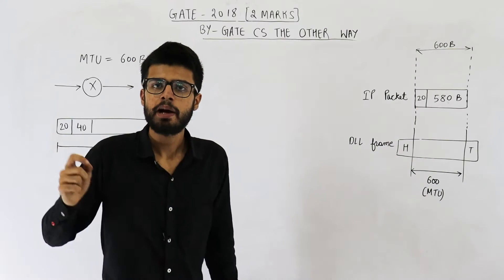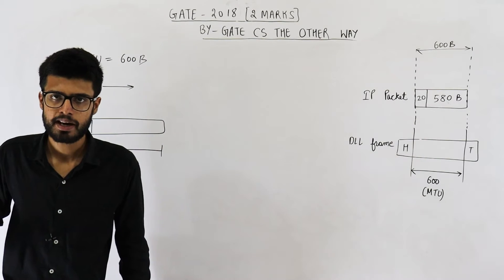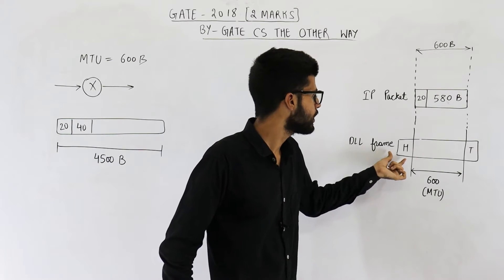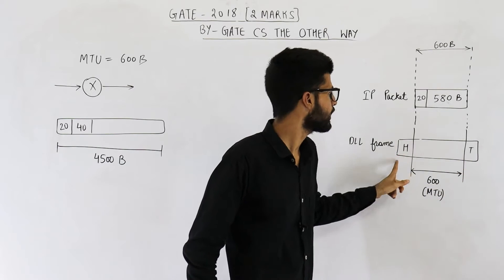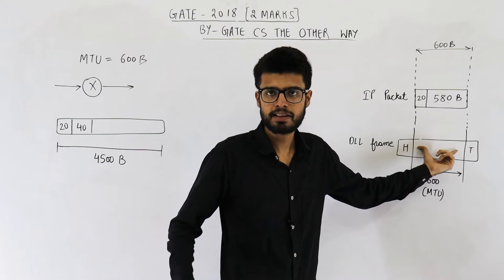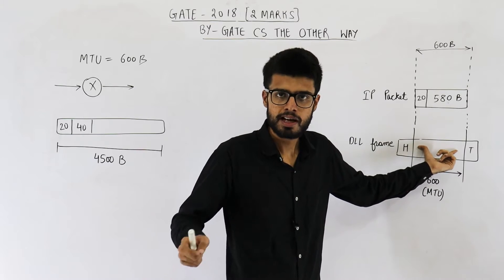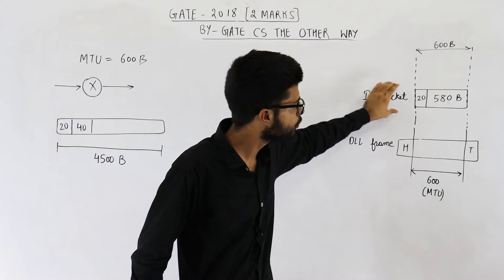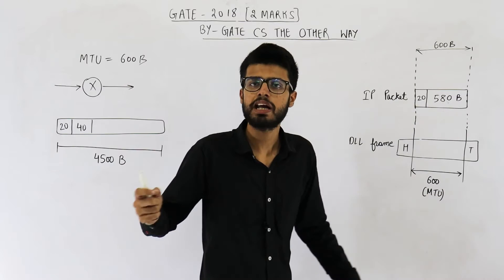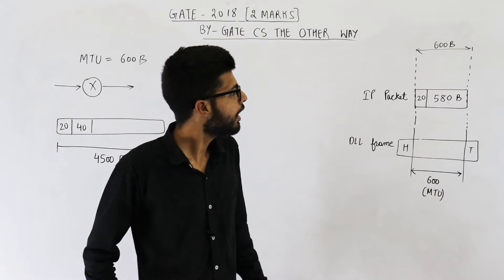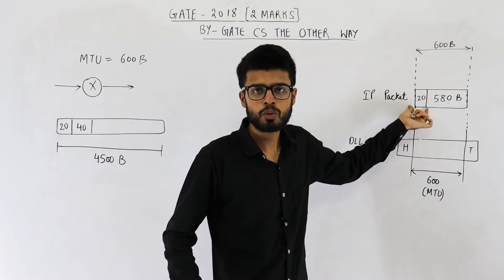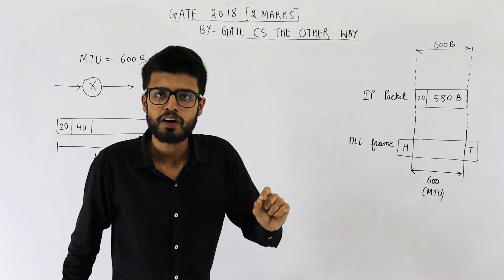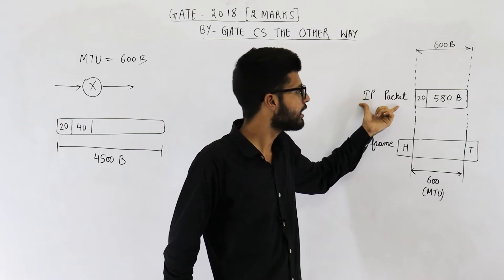What is the meaning of MTU? MTU means how much maximum data can be present inside one data link layer frame. A data link layer frame contains a header and a trailer. Except for the header and trailer, the maximum data that can be contained in this frame is called the MTU, which is 600 bytes in this case. So an IP packet has to be placed in this part, meaning the maximum size of IP packet allowed is 600. Out of these 600 bytes, there will be a 20-byte header, meaning you can actually keep only 580 bytes of data in an IP packet.